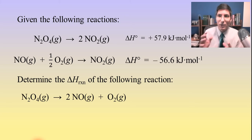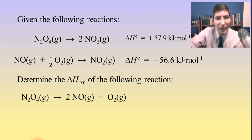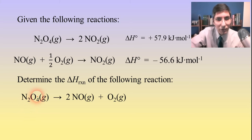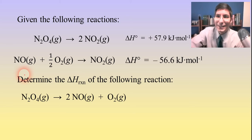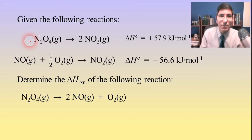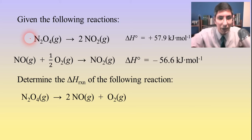We have to flip things around, maybe multiply by coefficients to make it work out. One thing I notice is that N₂O₄, the reactant in my overall reaction, is on the left side with a coefficient of 1. The only place I see N₂O₄ is in reaction number 1, and it's on the left side with a coefficient of 1. So that's a good sign — I probably don't need to do anything to reaction number 1.